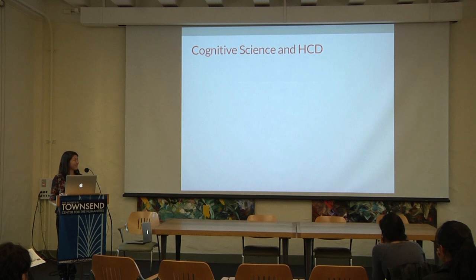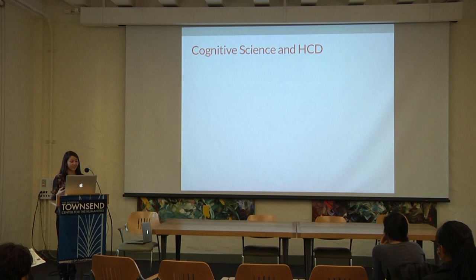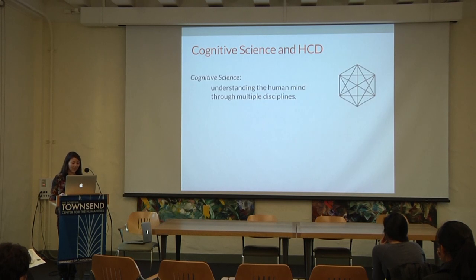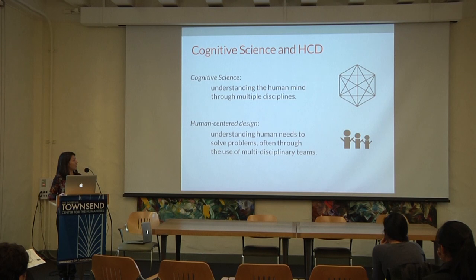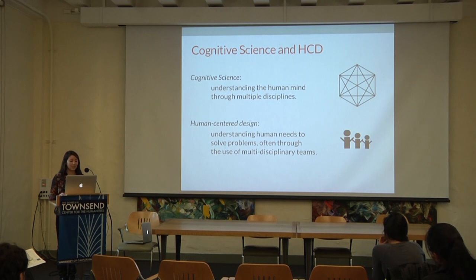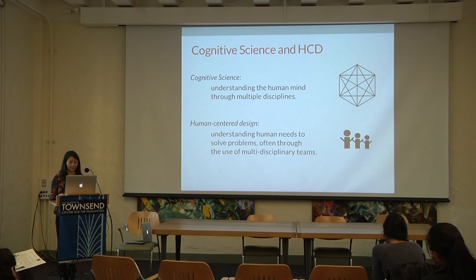Even though in summer 2011 I had no idea what Human Centered Design was, since then I've noticed a lot of similarities between the two fields. Cognitive Science is about understanding the human mind through multiple disciplines, and Human Centered Design is about understanding human needs to solve problems, often through the use of multidisciplinary teams.